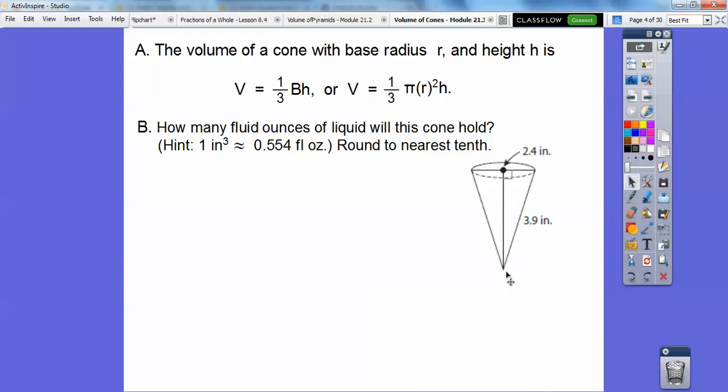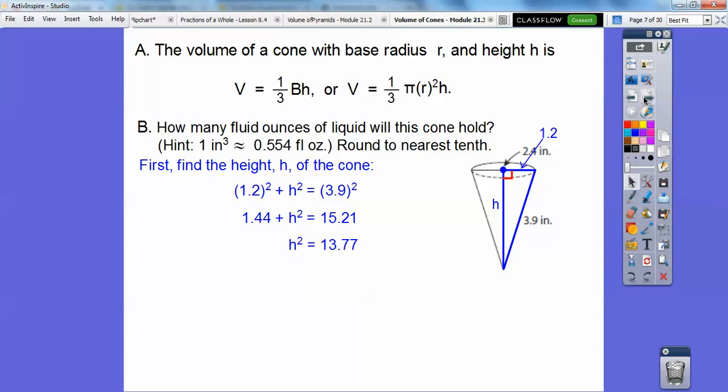We need to find that height first. So here, do you see this whole diameter is 2.4 so this radius is 1.2, and then we're going to use the Pythagorean theorem to find out the height right there. So 1.2 squared plus h squared equals 3.9 squared, and then subtract that off and we get h squared equals that, so square root that and we get about 3.718.